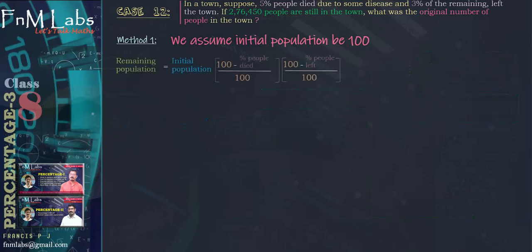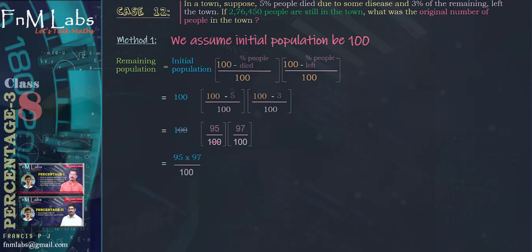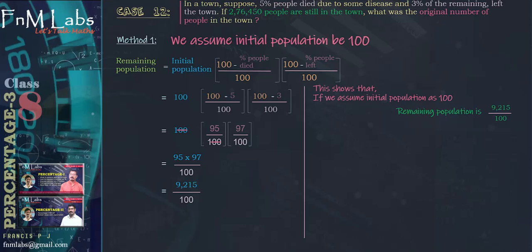We have the formula involving decrease percentage: remaining population = initial population × (100 - % people died)/100 × (100 - % people left)/100. So that is equal to 100 × (95/100) × (97/100), which equals 9215/100. So that is the remaining population when we assume the initial population as 100. This shows that if we assume initial population as 100, the remaining population is 9215/100.